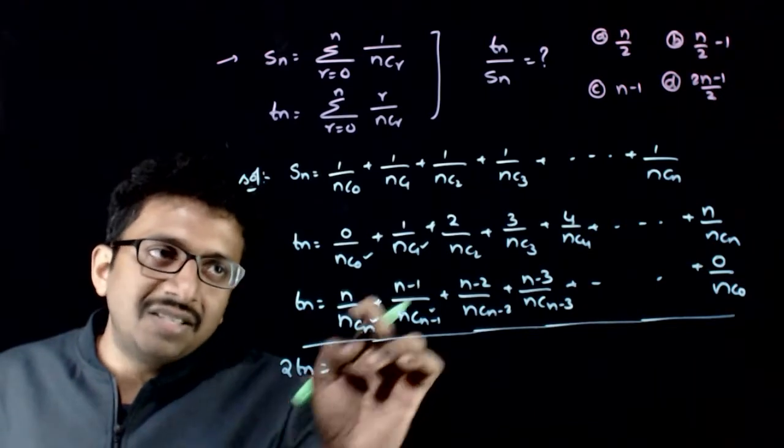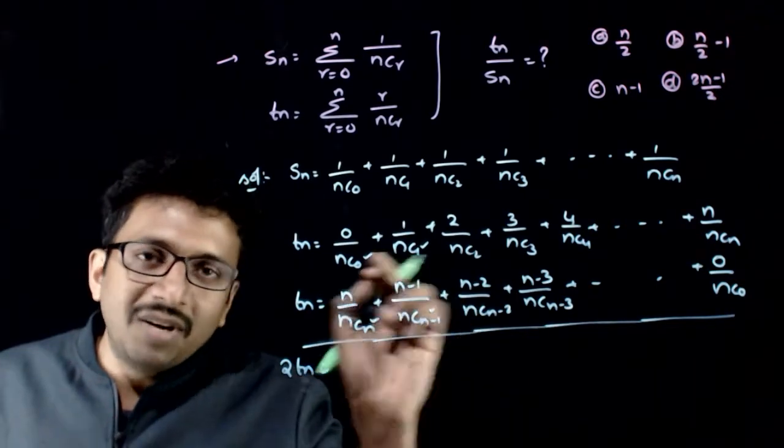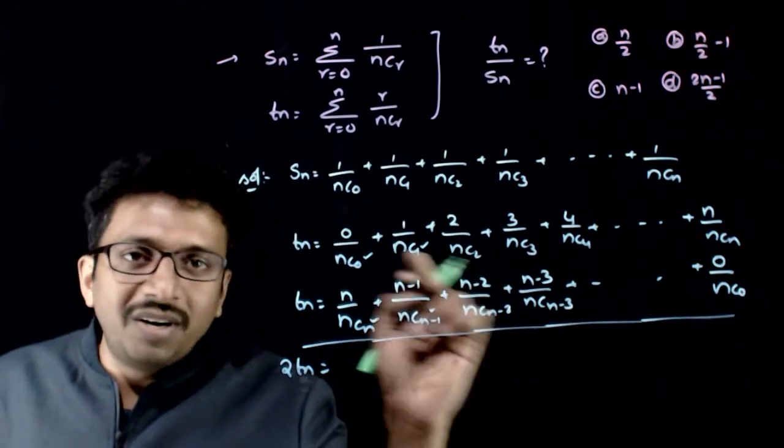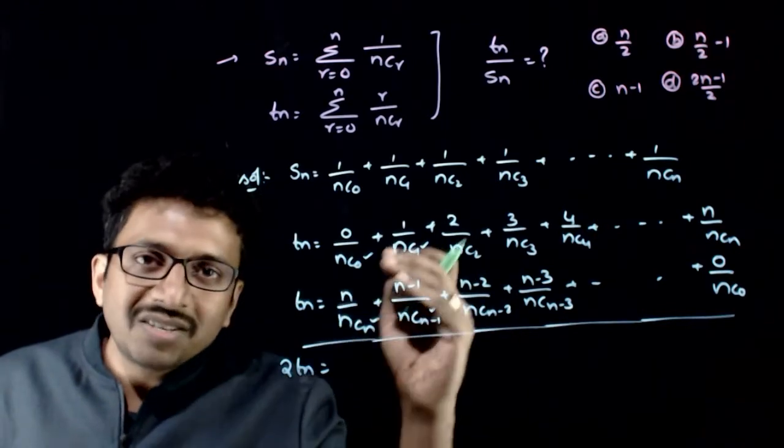So nCn can be written as nC0. nC(n-1) can be written as nC1. nC(n-2) can be written as nC2, and so on. So the denominators are same.